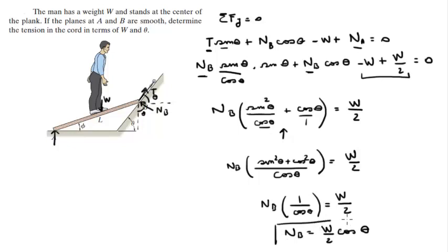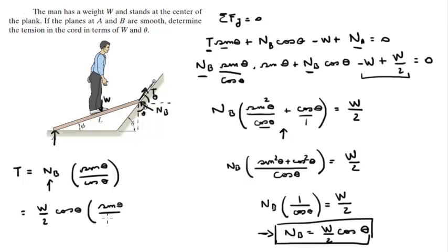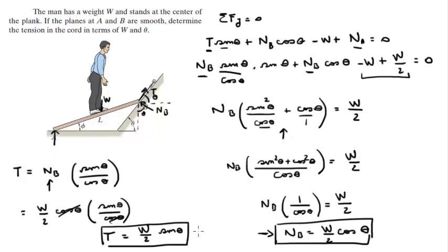Now we plug NB = (W/2)·cos(theta) into the tension equation T = NB·sin(theta)/cos(theta). This gives T = (W/2)·cos(theta)·sin(theta)/cos(theta). The cosine of theta cancels out, and you get that the tension T = (W/2)·sin(theta). Final answer.